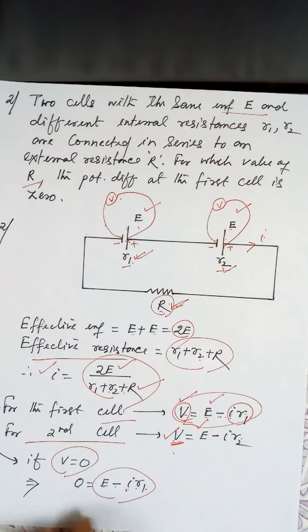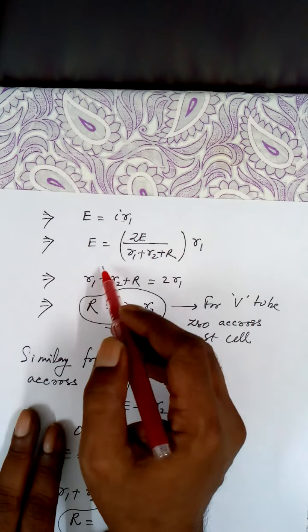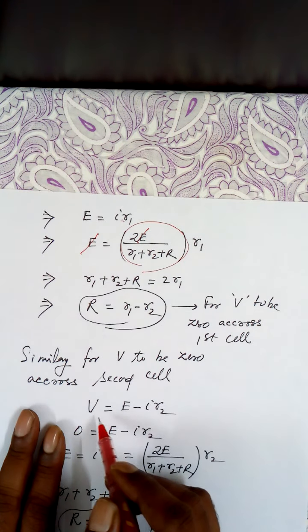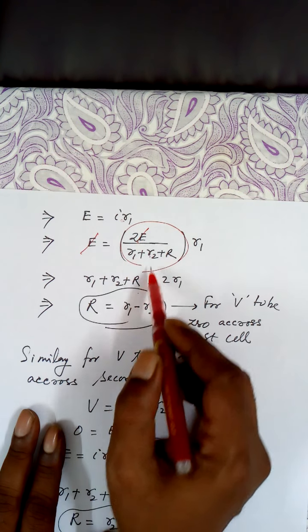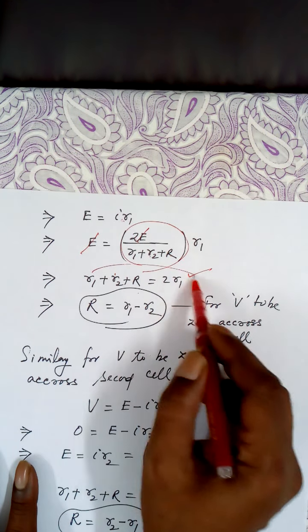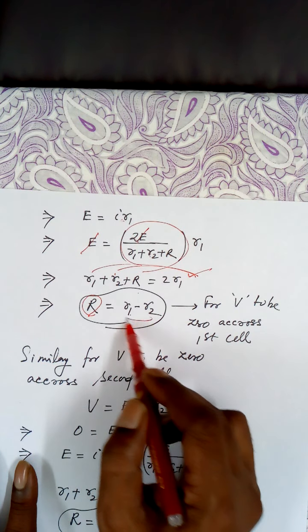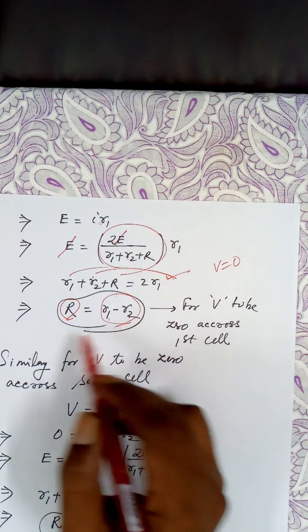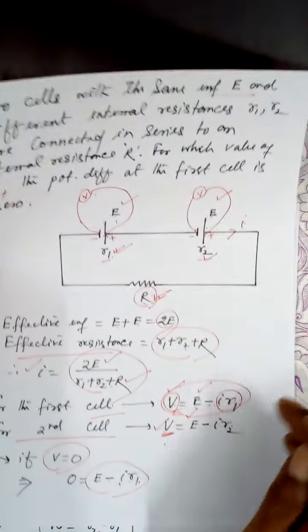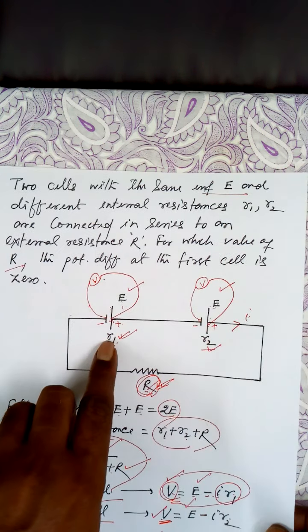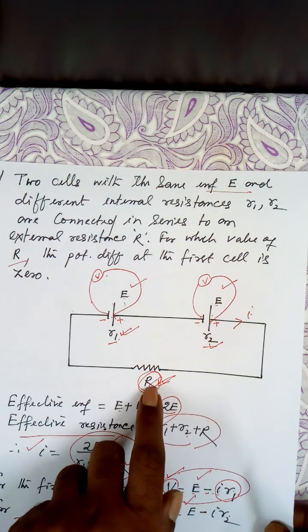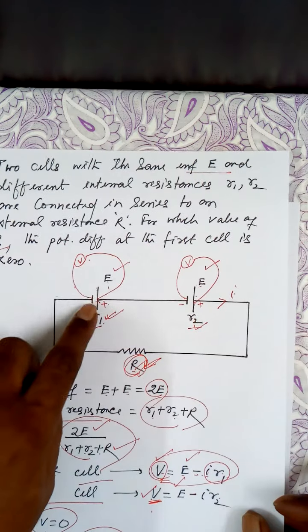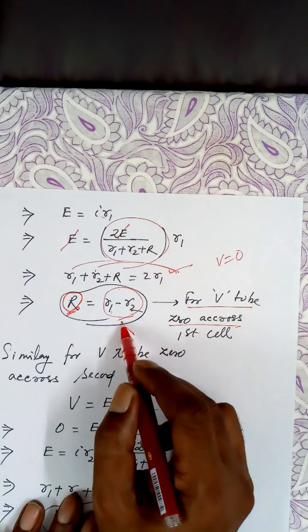Now put the value of I here. By rearranging, E equals I times R1. Substituting I equals 2E divided by R1 plus R2 plus R, the E cancels. Cross multiplying gives R1 plus R2 plus R equals 2 times R1. Bringing R1 to one side and R2 to the other, we get R equals R1 minus R2. So if the external resistance R equals R1 minus R2, the potential difference across the first cell will be zero.